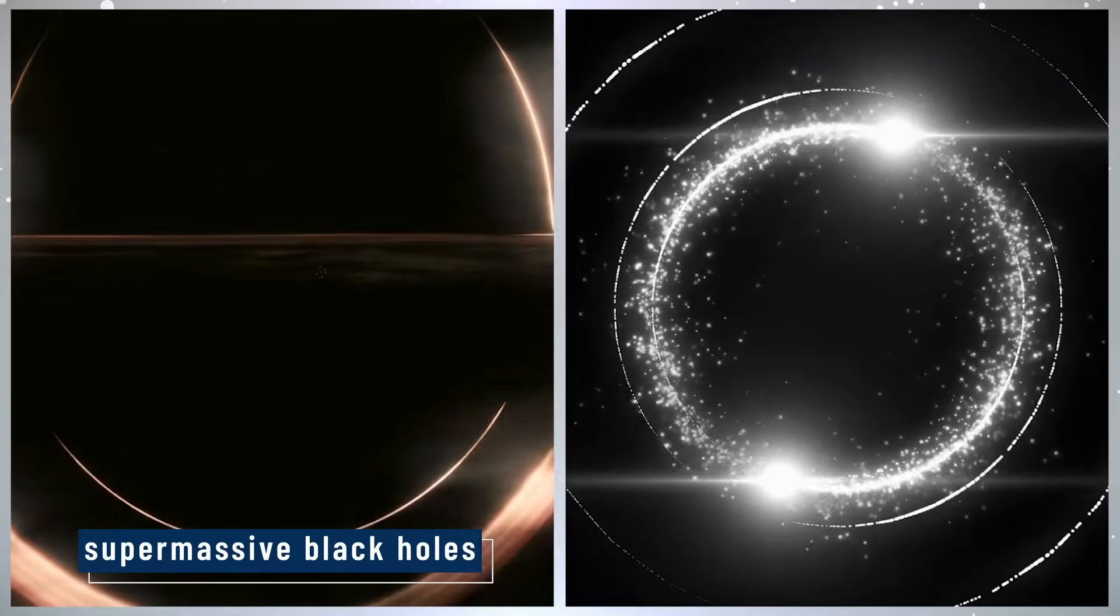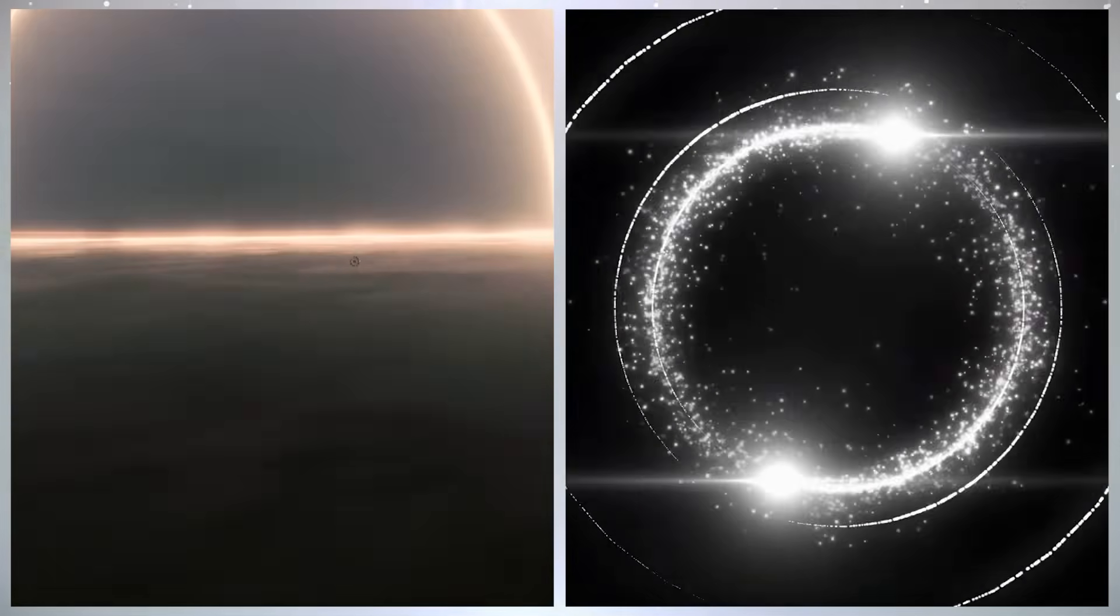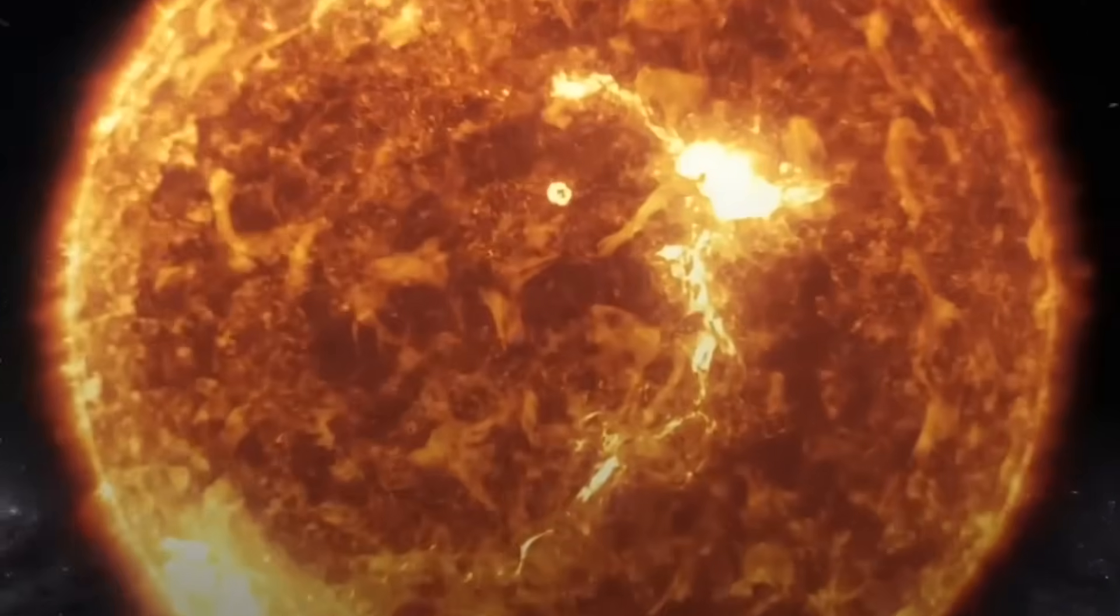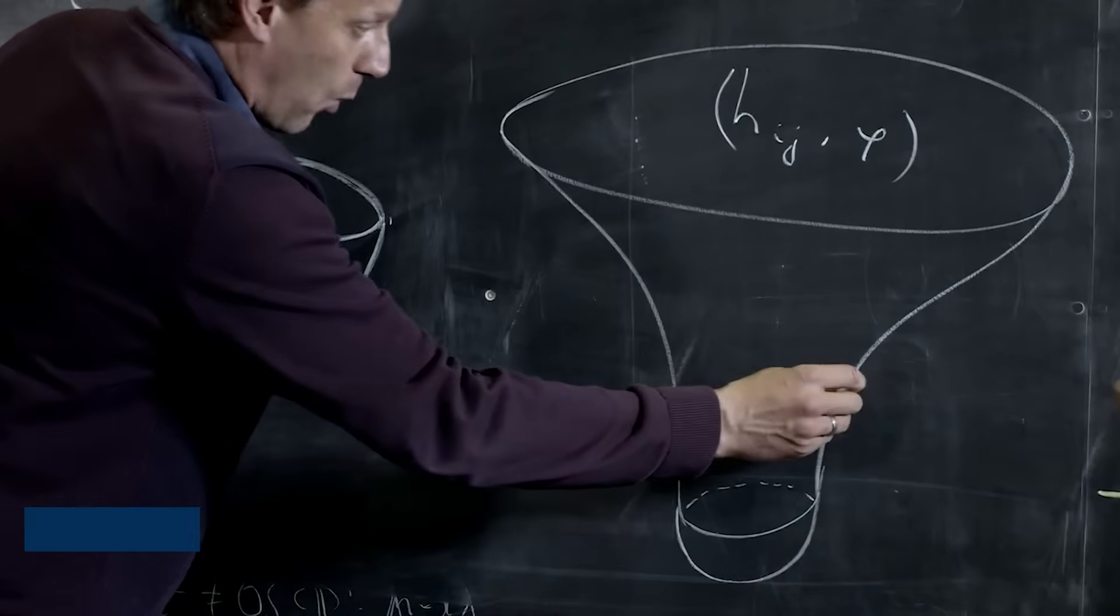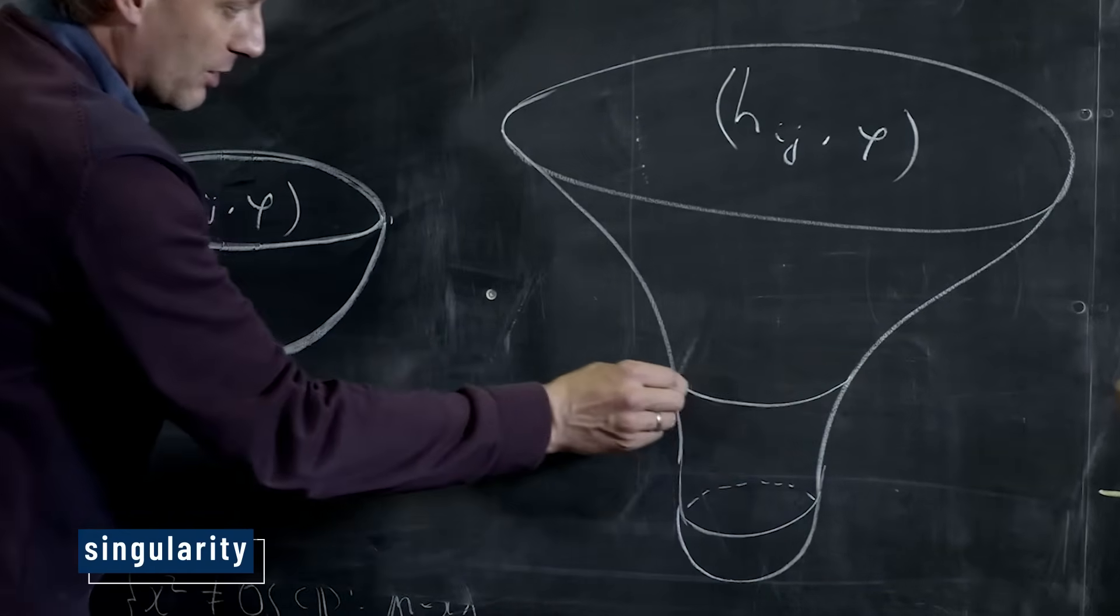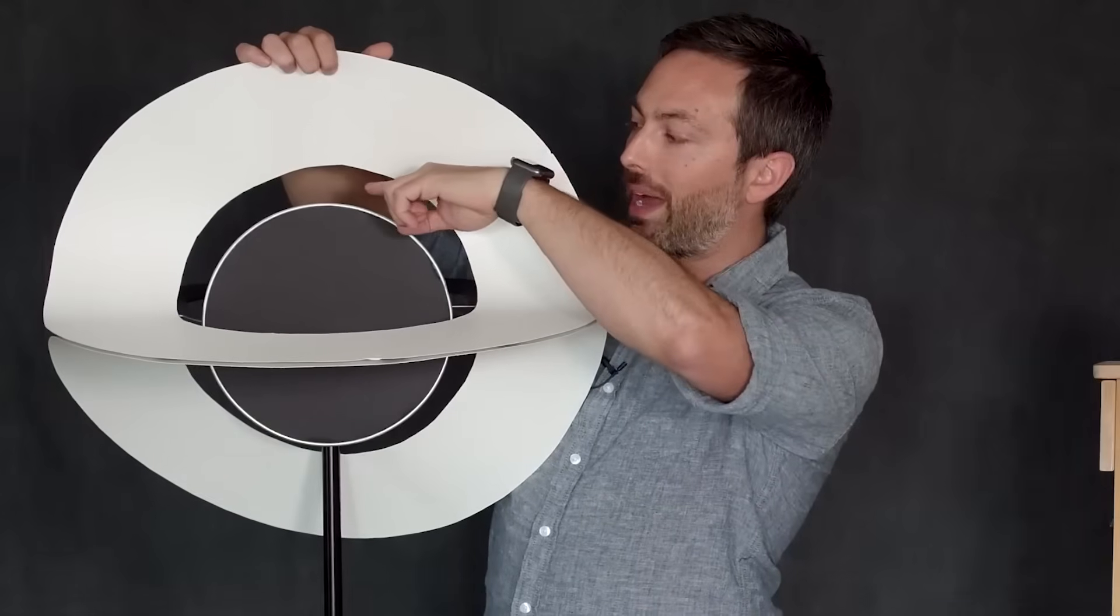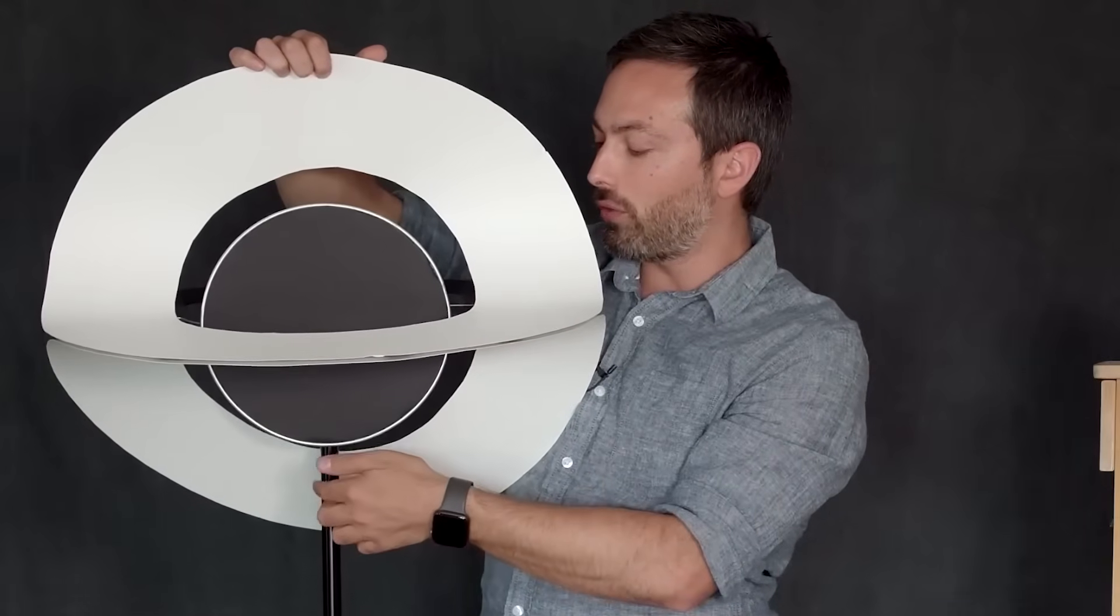And then there are the giants, super-massive black holes, which sit at the centers of galaxies. These beasts can be billions of times more massive than the sun. At the heart of every black hole is something called a singularity, a point where space and time stop behaving normally. Our current physics can't fully explain what's happening inside.